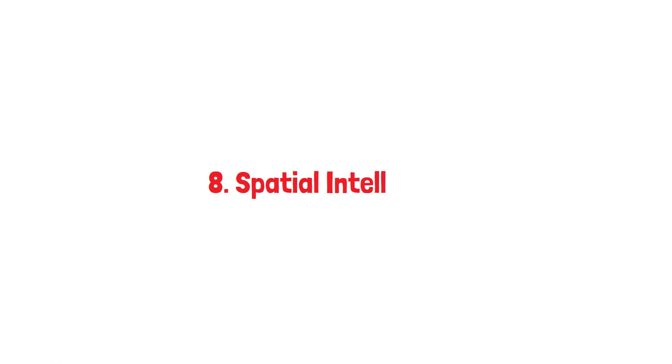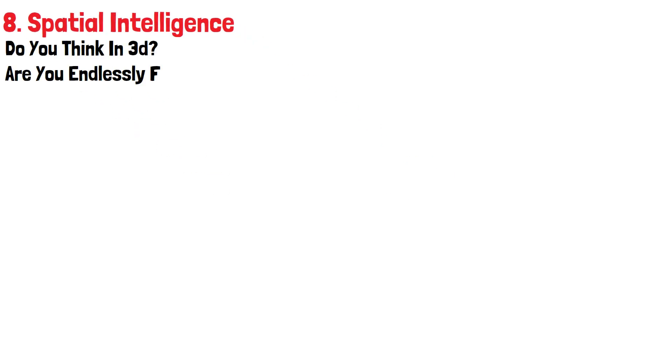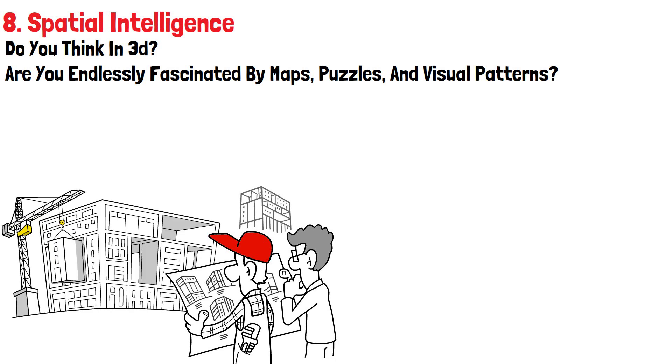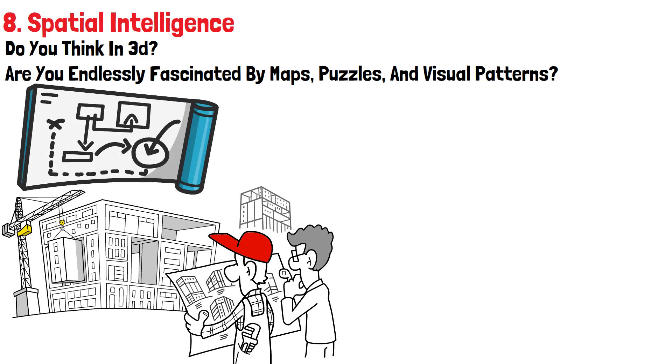Number eight, spatial intelligence. Do you think in 3D? Are you endlessly fascinated by maps, puzzles, and visual patterns? If so, you likely have strong spatial intelligence. Your mind intuitively comprehends physical space and dimensions. You can mentally rotate objects, navigate new environments with ease, and visualize things from different perspectives.